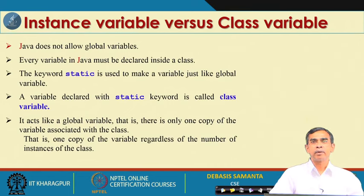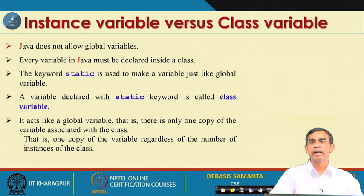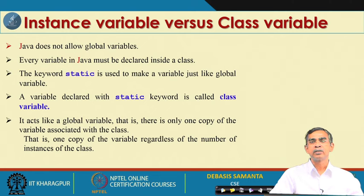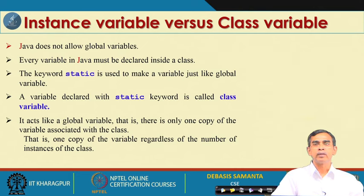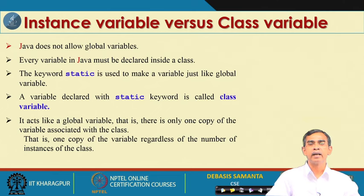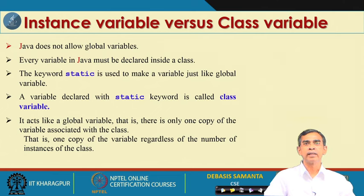Now we will discuss static variable declaration. We mentioned the static concept when discussing the main method declaration — public static void main. A method declared as static can be called without creating any object. The static keyword in Java has its own implications. In Java, there is no concept of global variable declaration; all variables are encapsulated in the class. But sometimes we may require global variables, and Java developers can provide this by means of the static keyword.